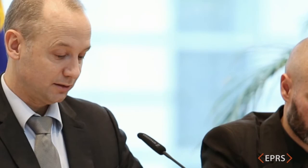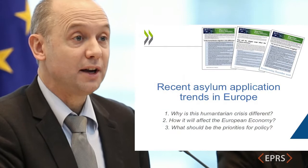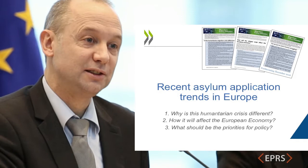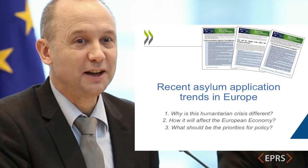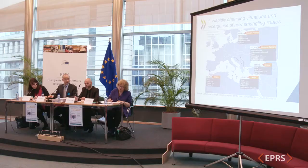Let me now turn to some facts, figures, and reflections about this recent refugee and humanitarian migration crisis in Europe. I will briefly cover three questions: first, why is this humanitarian migration crisis different from previous crises? I will try to demonstrate that it is different in many respects, but there are also some common aspects. Second, the economic impact of this crisis. And third, as a conclusion, what could be priorities for policy.